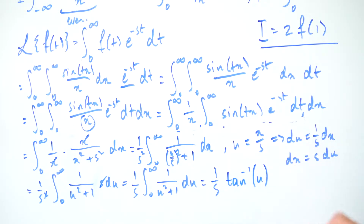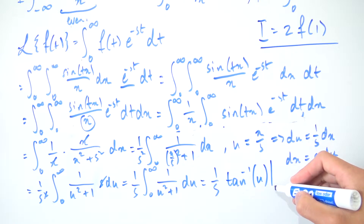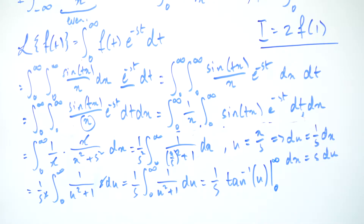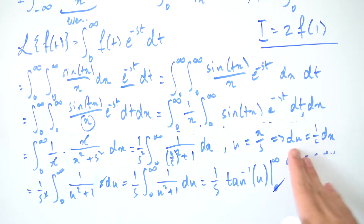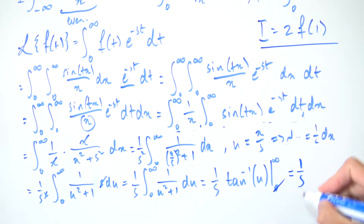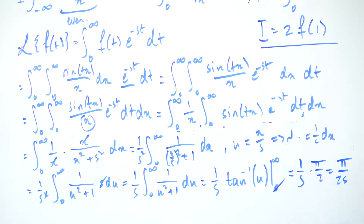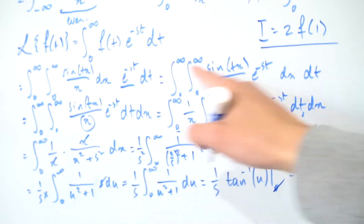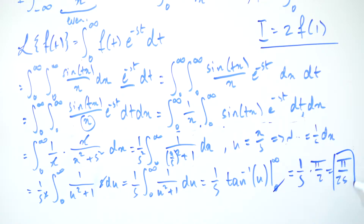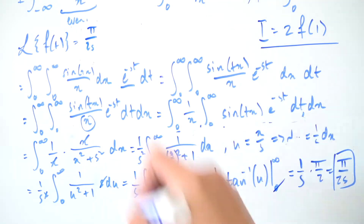The antiderivative of 1/(u² + 1) is arctan(u), evaluated from zero to infinity. The limit as u approaches infinity of arctan(u) is π/2, and arctan(0) = 0. So the whole expression evaluates to (1/s)·(π/2) = π/(2s). Therefore the Laplace transform of f(t) is exactly π/(2s).